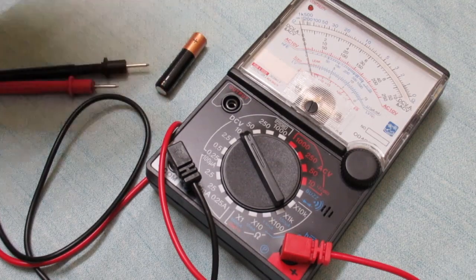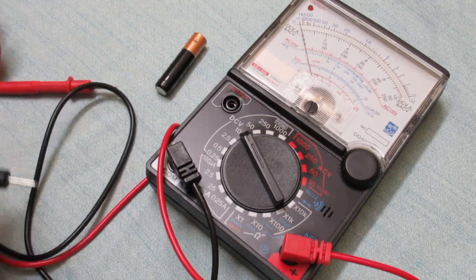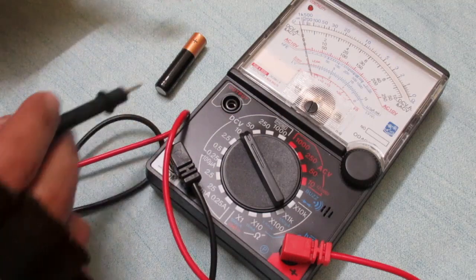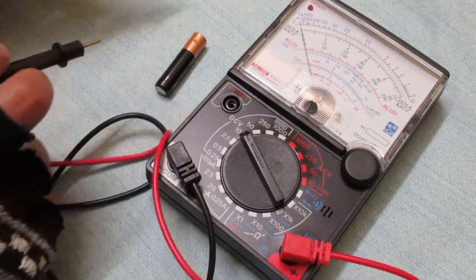First, insert the multimeter probes according to the video tutorial and set the rotary switch to 10 volt DC.